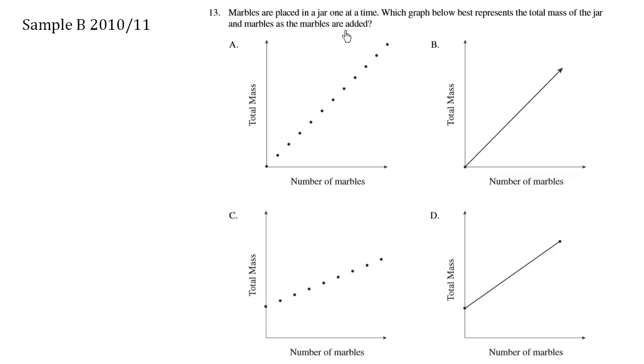Marbles are placed in a jar one at a time. Which graph below best represents the total mass of the jar and marbles as the marbles are added?